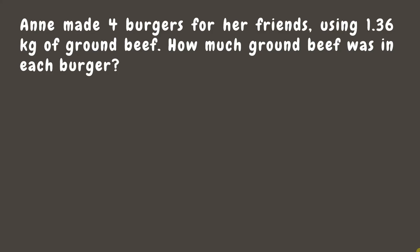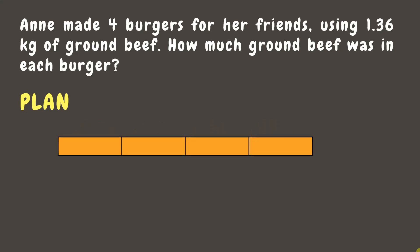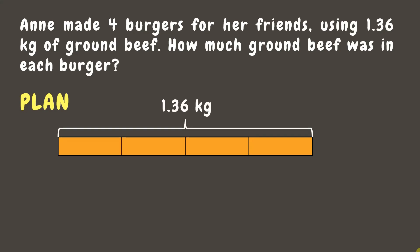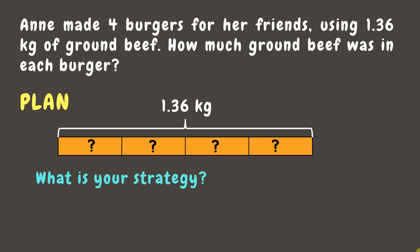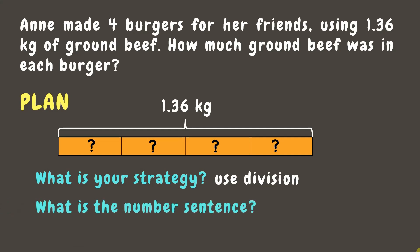Now let's think about how to solve the problem based on the given data. We know that four burgers are made of 1.36kg of ground beef, and we are figuring out the amount of ground beef in each burger. We can plan to divide 1.36kg by four burgers, which gives us the number sentence: 1.36 ÷ 4 = n, where n is the amount of beef in each burger.